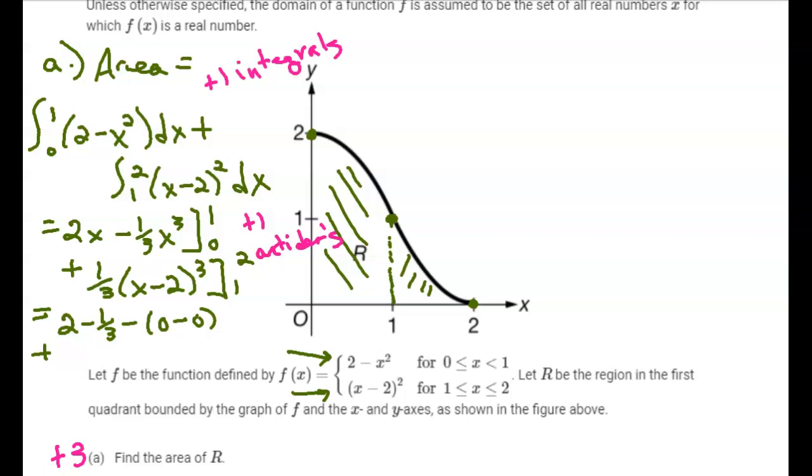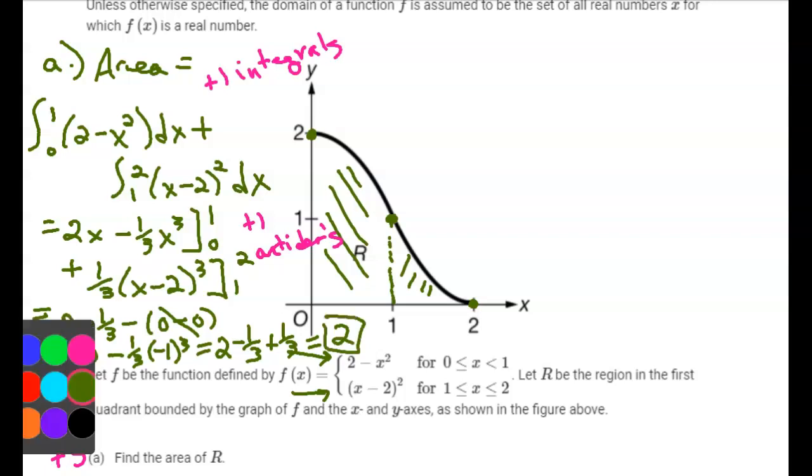evaluating the next, which will be 1 third, 2 minus 2 which is 0 cubed, minus plug in that lower limit, 1 third, negative 1 to the third. If I combine all of that, I get 2 minus 1 third plus 1 third. Area bound under that curve is 2, and you get a point for that correct answer.